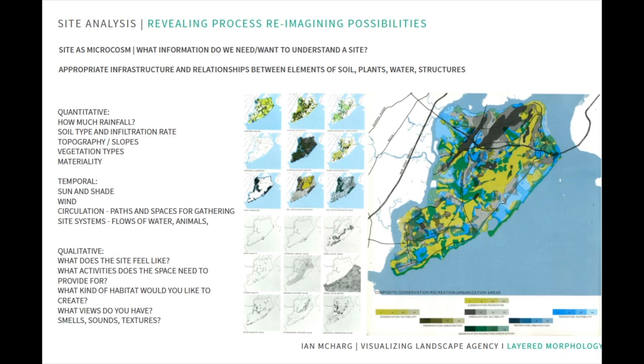I just had to bring up Ian McHarg, because I think his book Designing with Nature has influenced landscape architects, engineers, and designers. Even though this was before computers and GIS, it proposed a whole way of looking at the layers of a landscape and starting to analyze what's appropriate where — where does it make sense to urbanize, where do we want to allow room for river corridors and riparian habitat, and what's prime agricultural land. It's this reading of multiple layers that go into a place so that we can understand a larger vision for what makes sense in that space.